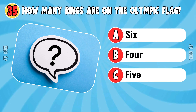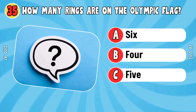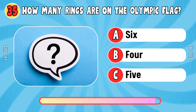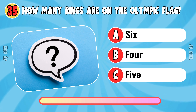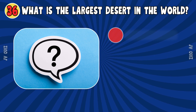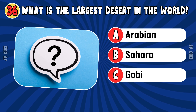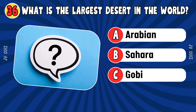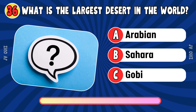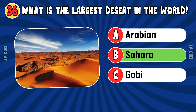How many rings are on the Olympic flag? Five. What is the largest desert in the world? Sahara.